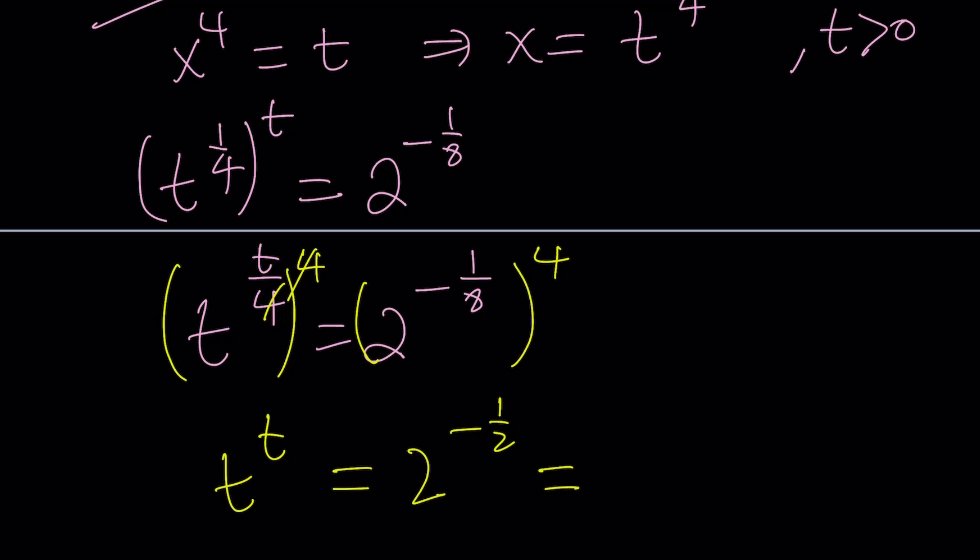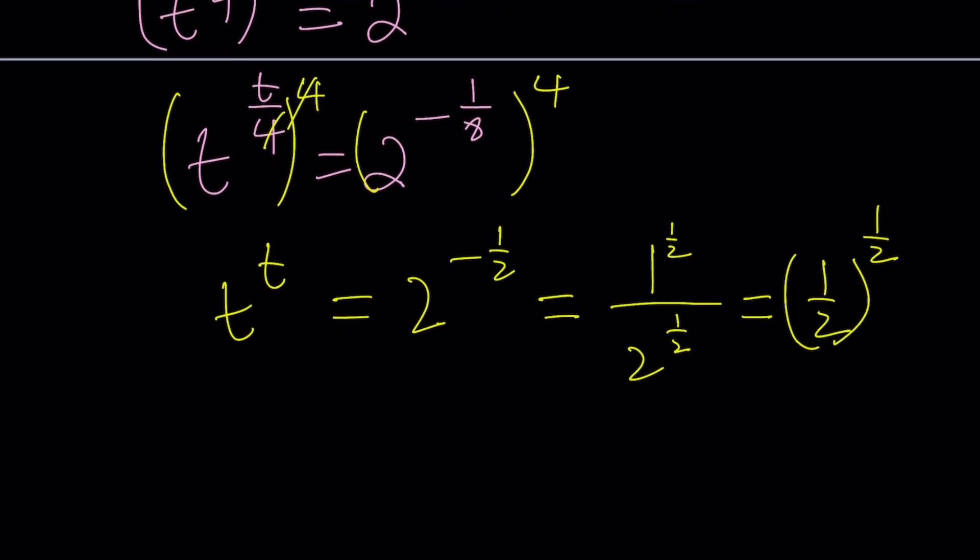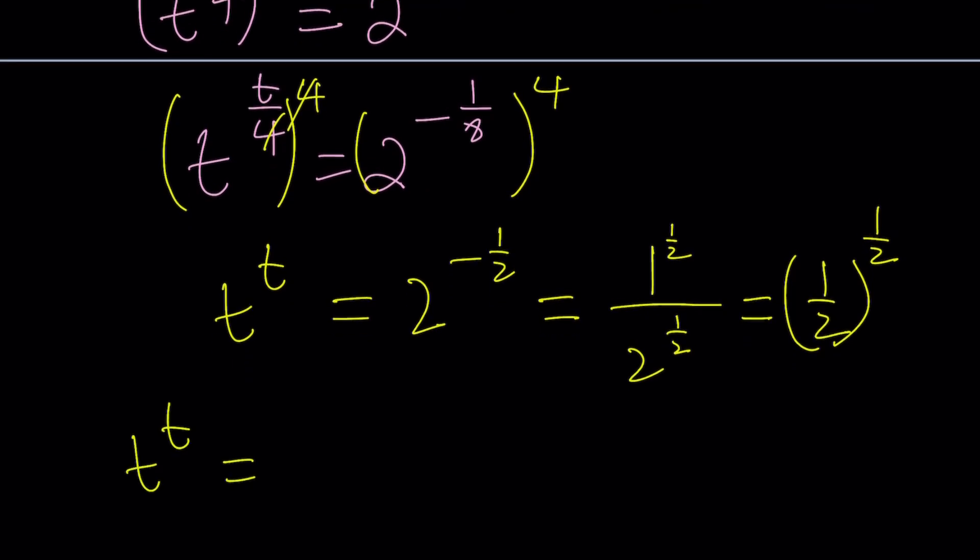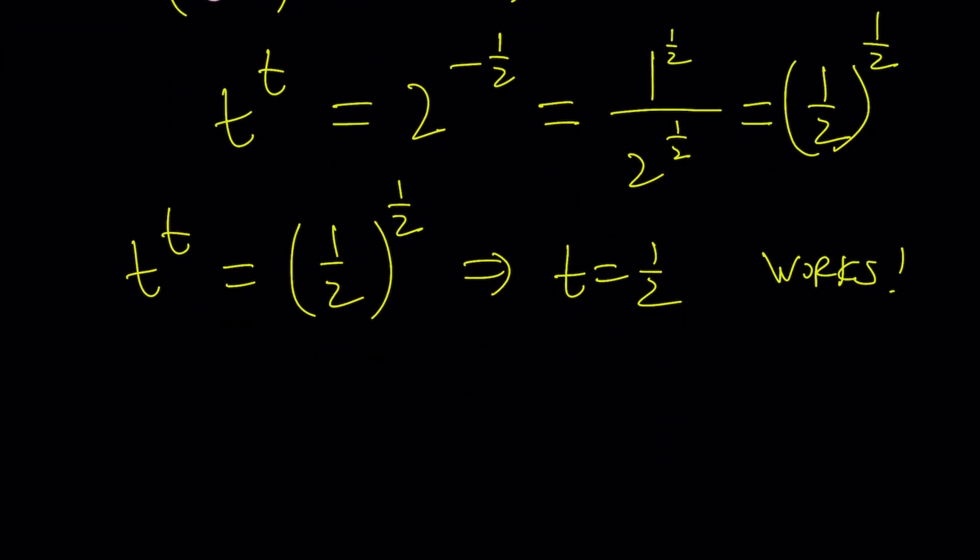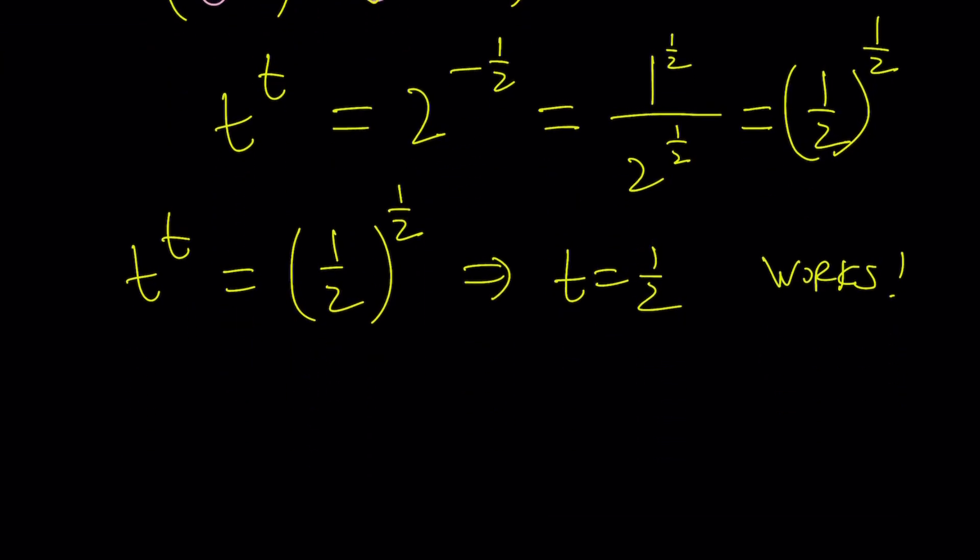And negative 1 half can be written as 1 over 2 to the power 1 half. And this is basically 1 half to the power 1 half. Because 1 to the power 1 half is 1. So we can write it like this and then use a common exponent. This should give you a really nice idea about what one of the solutions at least is going to be like. If t to the t is 1 half to the 1 half, then from here you can safely say that t equals 1 half works. I'm not saying that's the only solution.